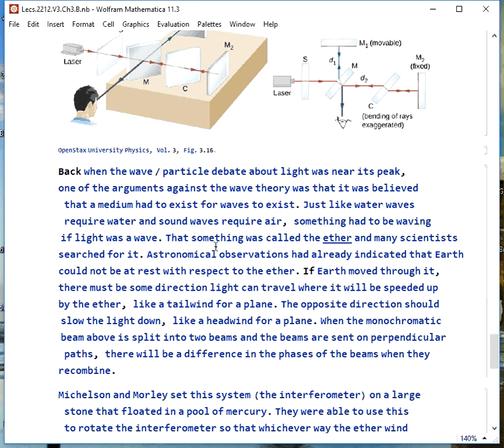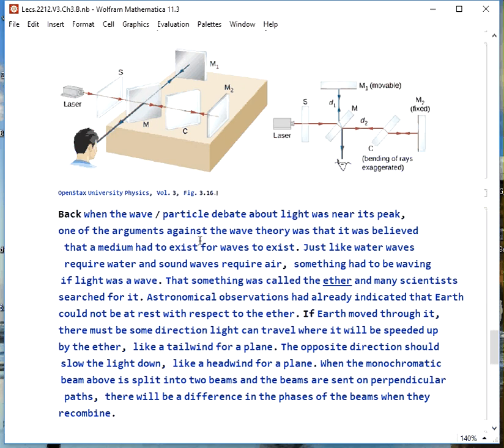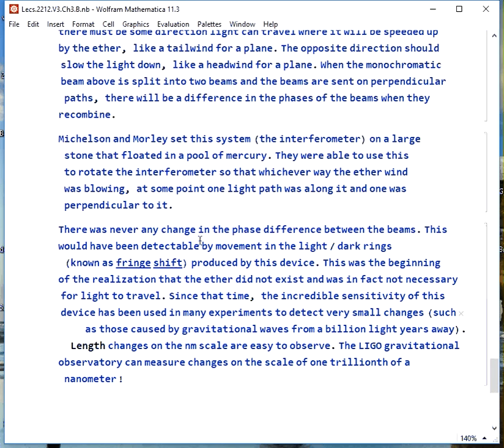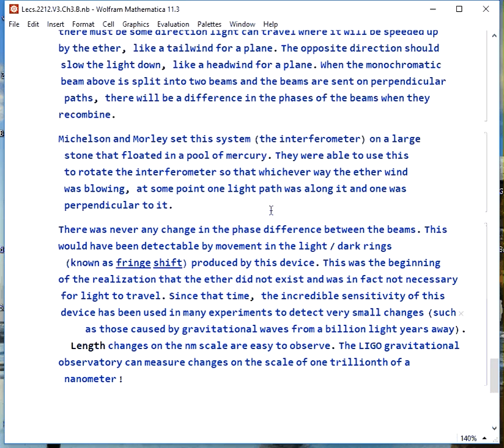We split the single color beam here into two and let the beams go on perpendicular paths and then recombine them and see if there's a phase difference. When Michelson and Morley built this it was on a giant stone slab and that floated on a pool of mercury so that they could rotate it and point an arm in every direction. They could just go through them all and what should have happened is at some point one arm would be along the direction of earth's motion through the ether and one arm would be perpendicular to it and we'd see changes.